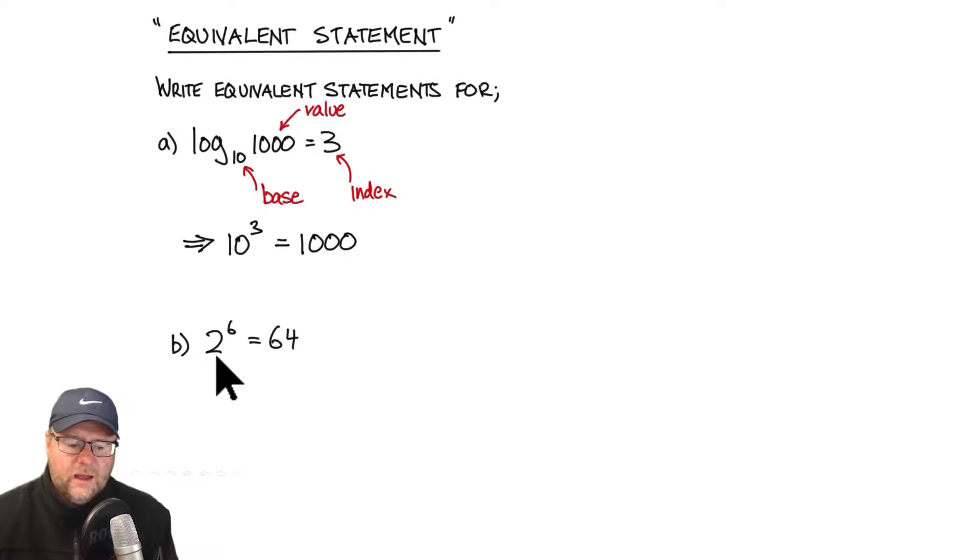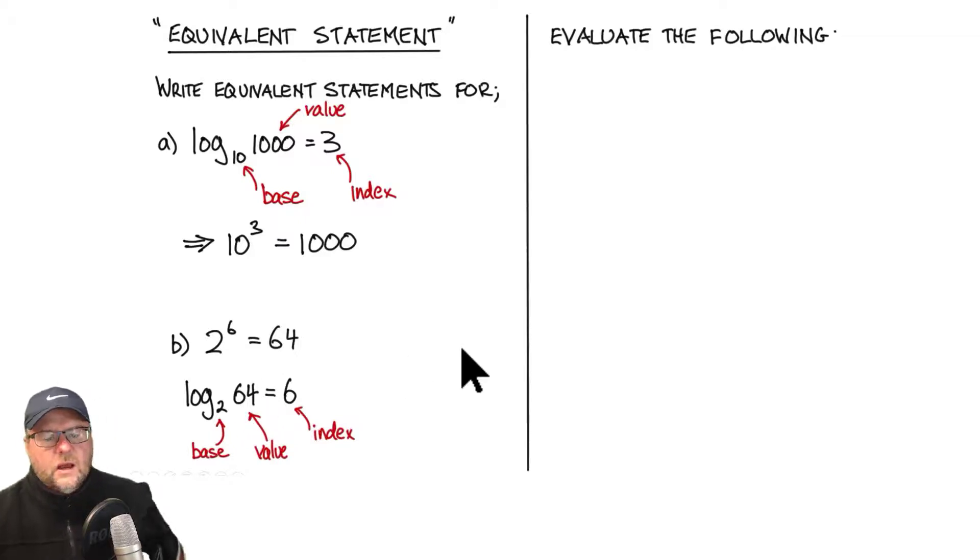Let's go the other way. I've got a base of 2. So my log will have base 2 because the base here is 2. The value of my index, my exponential, goes in next and then equals the index of my exponential goes on the right hand side here. Hopefully you can see that structure. The base, the value and the index. The base was 2. My index was 6. And my value, which goes in here, was 64.